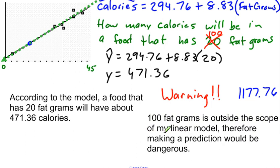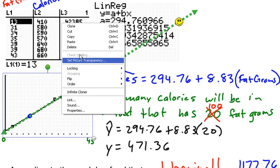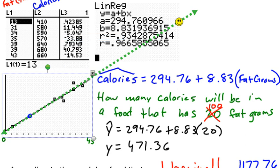This idea of predicting outside the scope of your model is very dangerous. The reason why it's dangerous is because we don't know what's going to happen outside of this model. Let me grab this and take it to another page, the scatter plot.